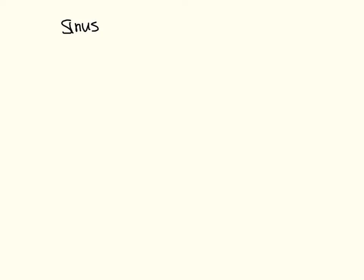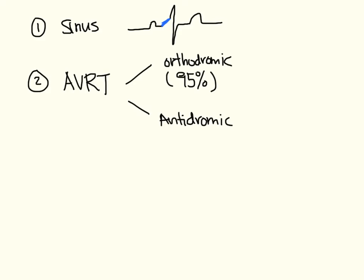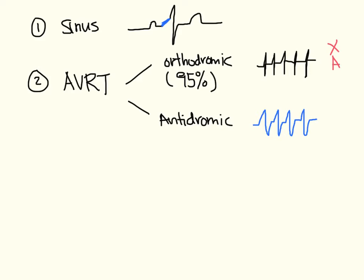To summarize so far: Wolff-Parkinson-White in sinus rhythm simply shows the delta wave. In a re-entry circuit, orthodromic conduction is much more common than antidromic. Orthodromic would be narrow, regular, and fast — treat by blocking the AV node. Antidromic would be wide, regular, and fast — treat as VTAC. You can distinguish orthodromic from antidromic because the complexes are narrow versus wide.